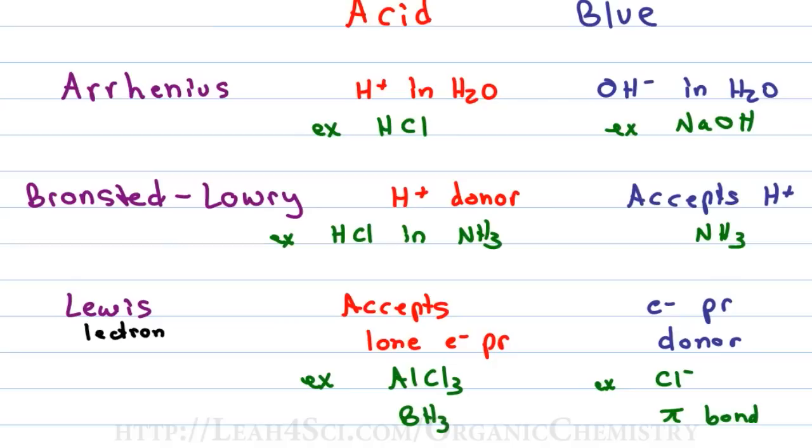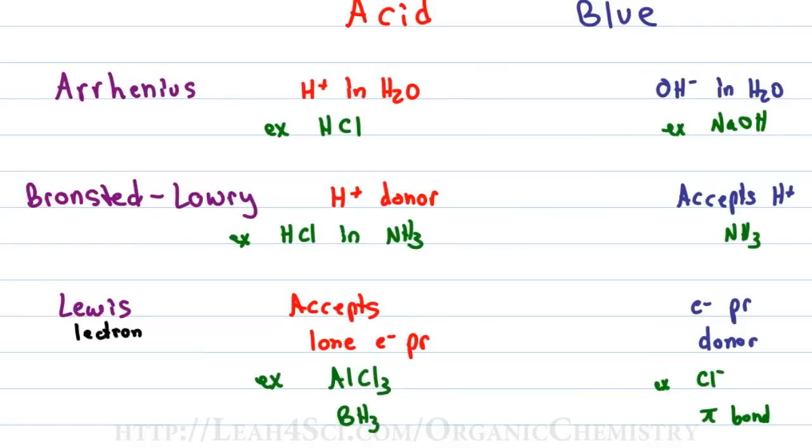If something is going to accept a lone pair of electrons, those electrons are negative or electronegative. And if opposites attract and like charges repel each other, you're not going to have a negative molecule accepting a lone pair of electrons. In other words, the Lewis acid must be positive or partially positive in order to accept a lone pair of electrons. So what you'll notice here is that the acid regardless of the definition is going to be positive or partially positive.